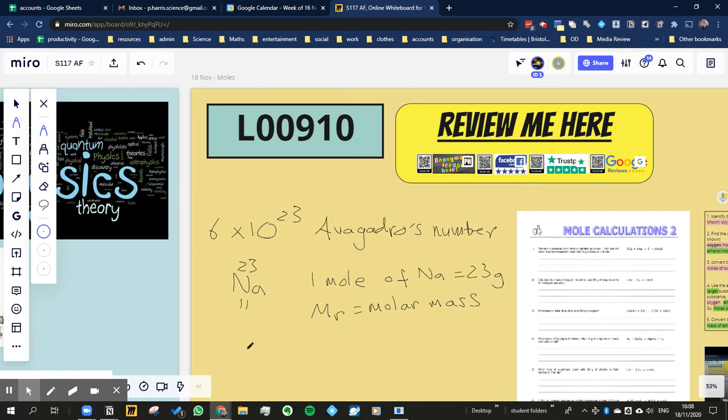So if we take carbon, carbon's got an atomic mass of 12. So one mole of carbon would equal 12 grams. The molar mass of carbon is 12 grams, right?